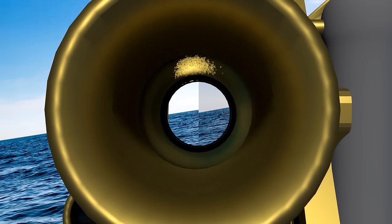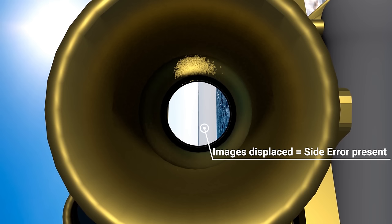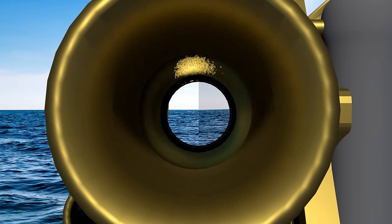You could rotate the sextant by 90 degrees, which would effectively give you a vertical line to tell you about side error, but that's not actually necessary. All you need to do is to tilt your head slightly, and any side error will show itself with the real and reflected horizons moving apart.